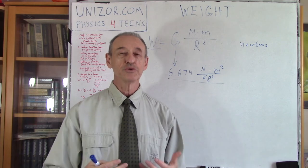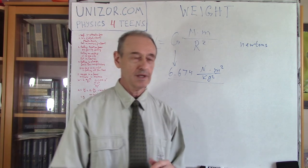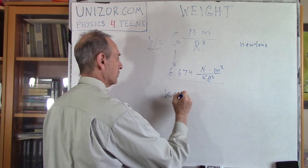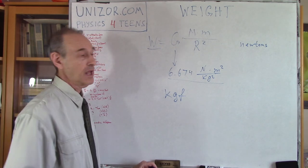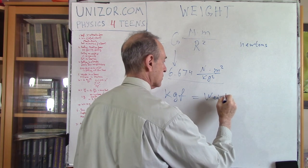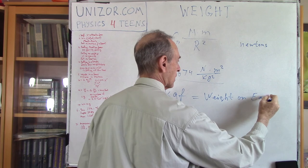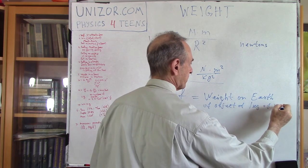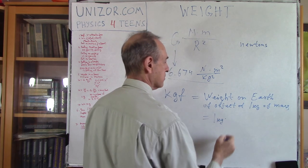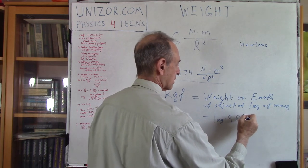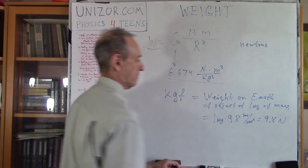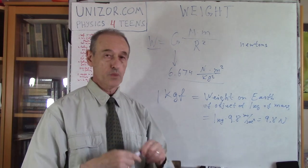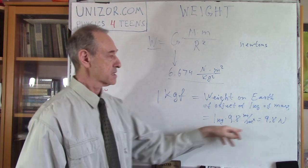We are talking not just about any kilogram — we are talking about kilogram of force. Kilogram of force, abbreviated as kgf, is the weight on Earth of an object of 1 kilogram of mass. That is 1 kilogram times 9.8 meters per second squared, which equals 9.8 Newtons. So 1 kilogram of force equals 9.8 Newtons. If weights are expressed in kilograms, this is basically your conversion.